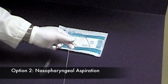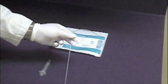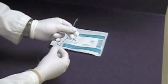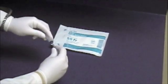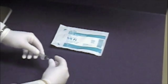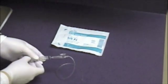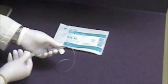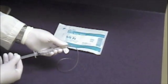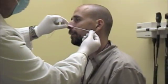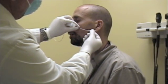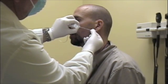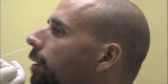The second option is the nasopharyngeal aspirate. The tubing has calibrations to help with measurement. The syringe is attached to the tubing and is manually occluded during aspiration. Measure from the corner of the nose to the front of the ear and insert the tubing one-half to two-thirds this length along the base of the nose.